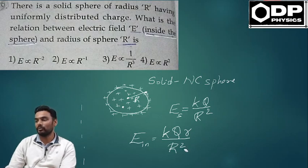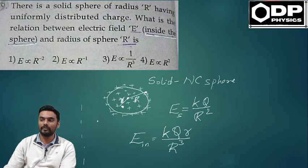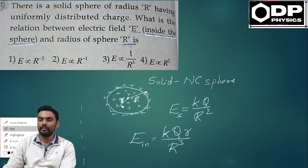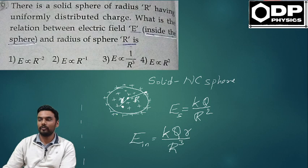This is small r by capital R cubed. This small r is the distance from the center to the point where we calculate electric field. So this is going to be our small r.